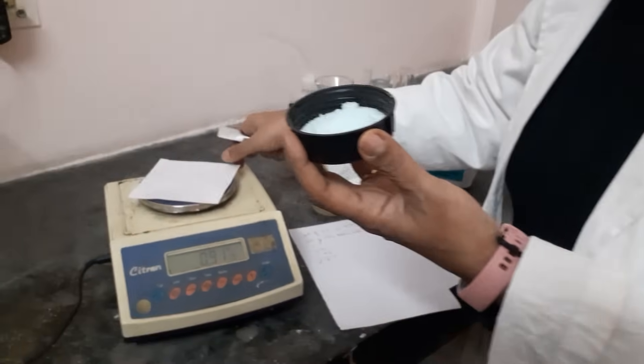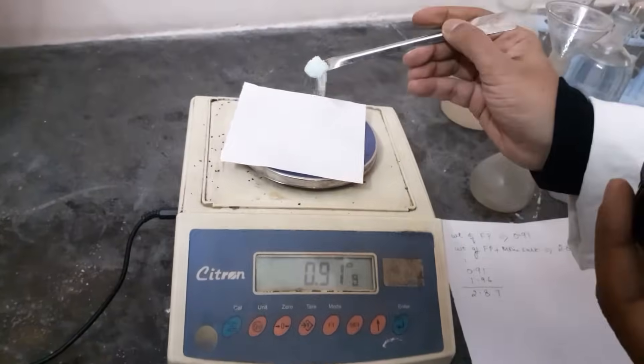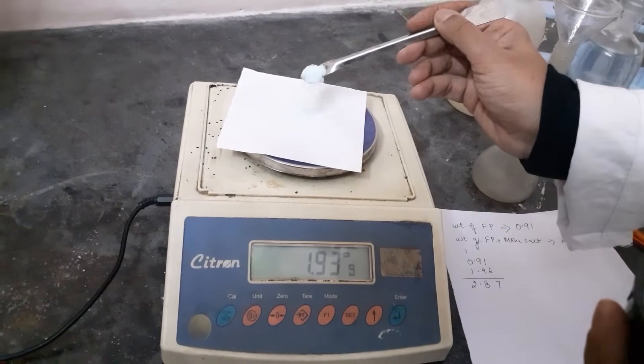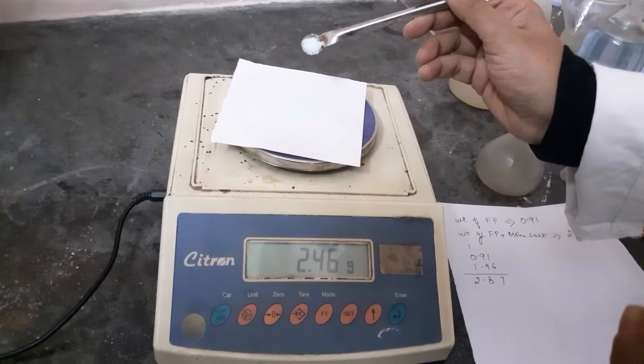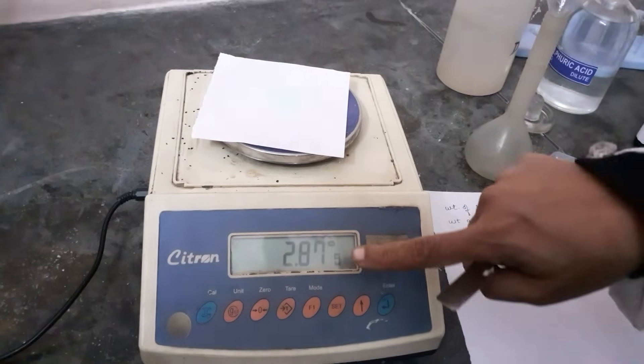Now I will start adding it to my piece of paper. Till when? Till 2.87. Up to 2.87 carefully add it. Can you see? Exactly 2.87. But if it becomes 2.88 also, don't worry. A little bit here or there, not to worry much.